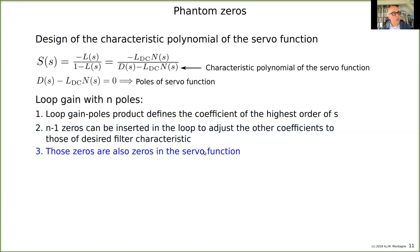Those zeros are also zeros in the servo function. If we put a zero in the loop gain, and s is not unity but a polynomial of s, then we find zeros in the servo function. This means we cannot make a maximally flat magnitude characteristic, because that is an all-pole function. A Butterworth filter, Chebyshev, or Bessel — these characteristics are all-pole functions. They don't have zeros.